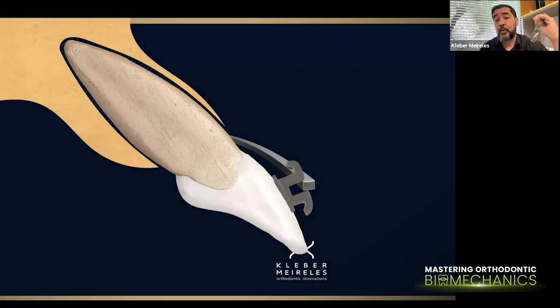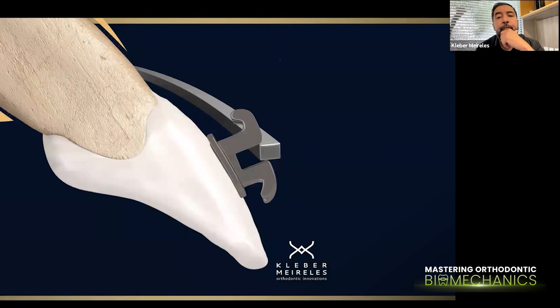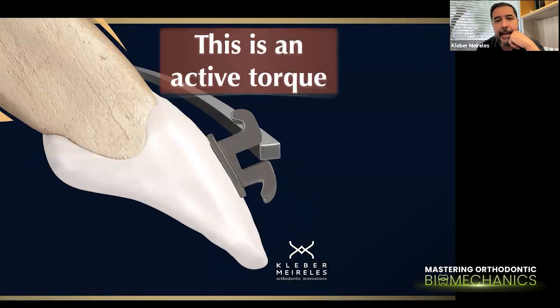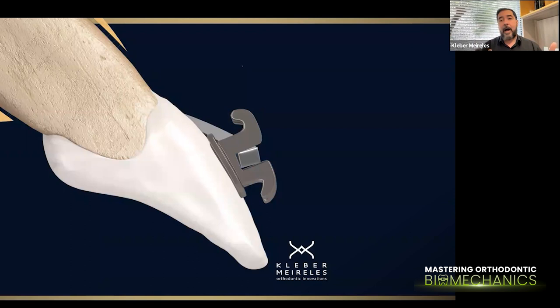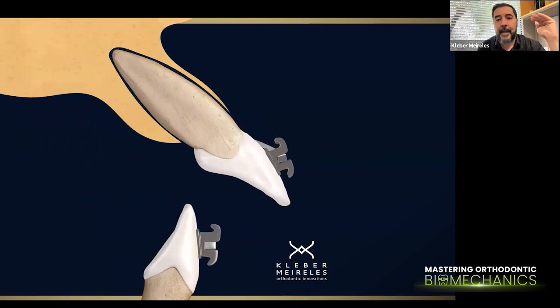Let's go back to this presentation step by step so you can understand this relationship and how important it is. Applying a neutral real torque in this condition generates an active torque. This active torque in this situation generates an inclination of the crown that goes palatal with the crown and buccal with the root. This is important because we have just one moment being applied here — the moment of the couple in this condition.